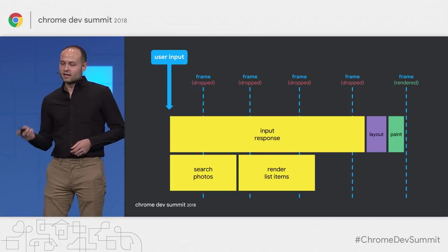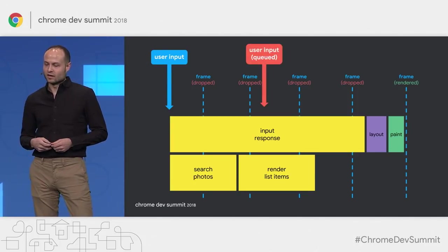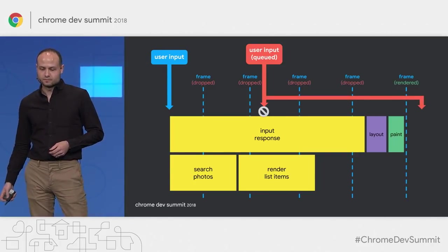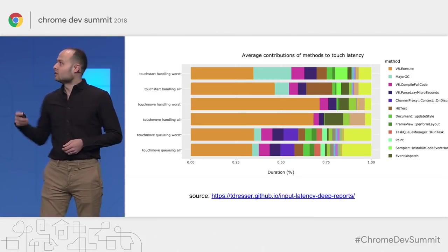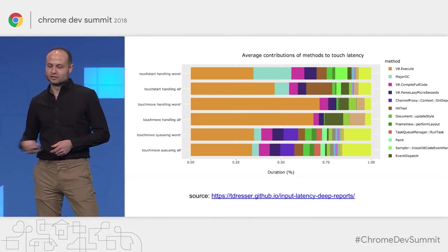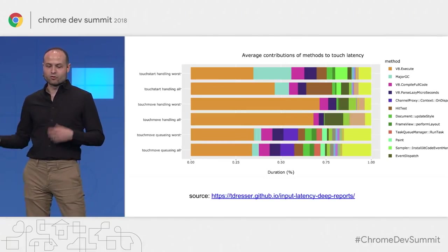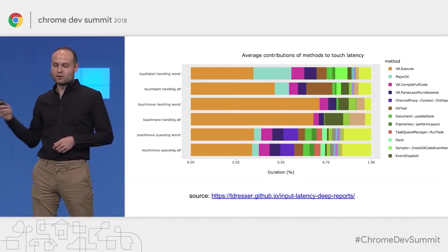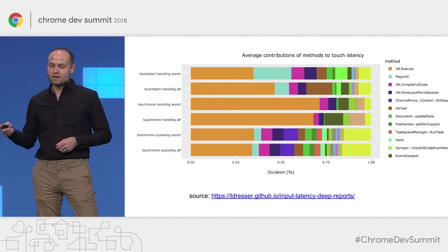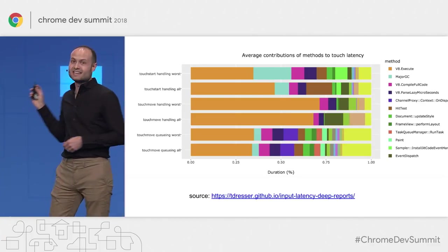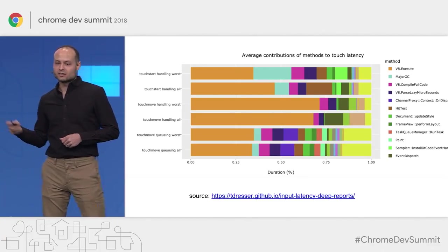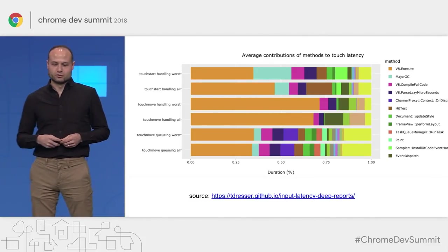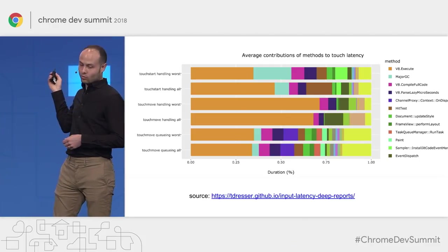In a simplified view: if we receive input and start doing some processing — searching photos, rendering some list items — we're skipping frames already. And if we receive additional input while that task is running, it will get queued and only executes once the current task completes. This is data captured from real users on real websites, showing where Chrome was spending time while handling input. The biggest contributor to touch input latency, both on average and in the worst case, is the v8.execute task — Chrome running JavaScript during touch handling.